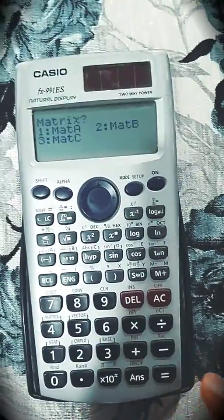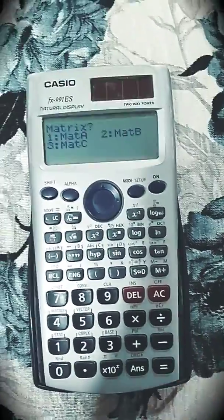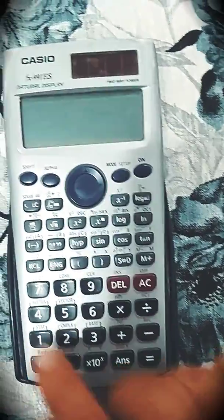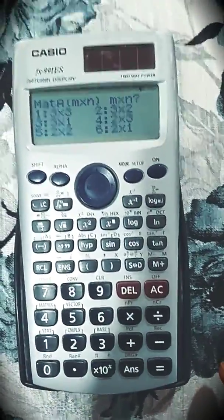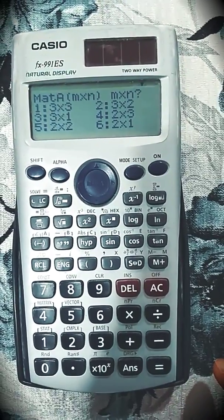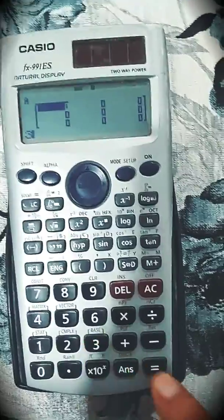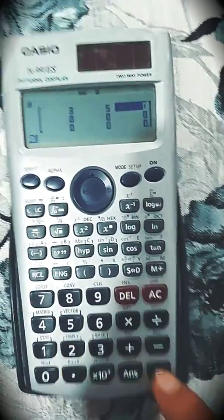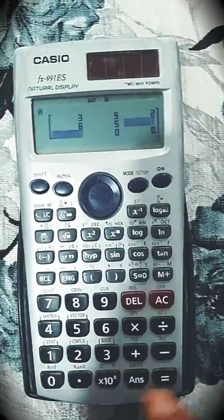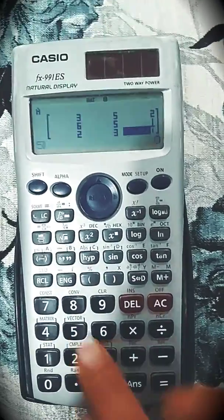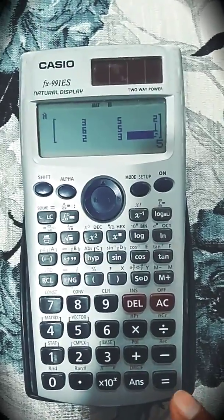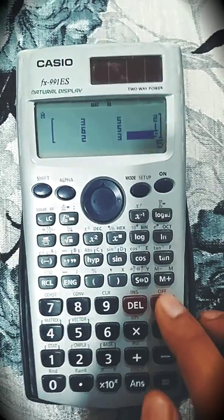Mode button. Now next mode is matrix mode. How to use it? It will ask for matrix. Let's take matrix A. Now select the size, whether it is 3 by 3 or 3 by 2. I will select 3 by 3 matrix. Put the values of the elements of the matrix. I am putting the random values for demonstration purpose. After putting all values, press AC.